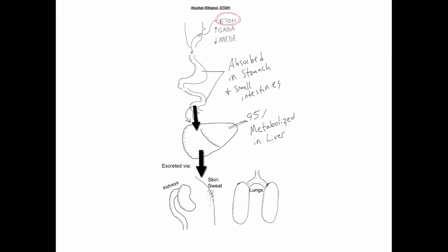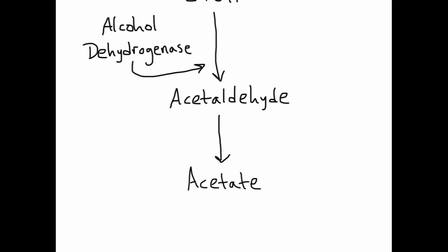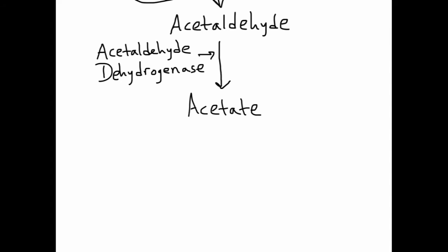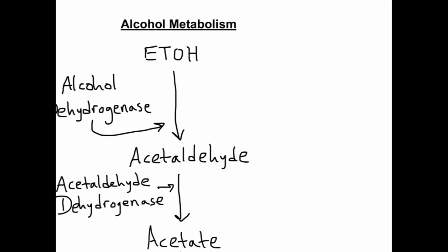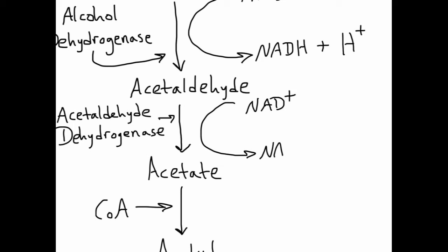Alcohol is broken down by the enzyme alcohol dehydrogenase in the stomach and liver into acetaldehyde. Acetaldehyde is then converted into acetate by acetaldehyde dehydrogenase. Coenzyme A, or CoA, then binds with acetate to form acetyl-CoA. Niacin, or vitamin B3, is required for this conversion and functions as nicotinamide adenine dinucleotide, or NAD, which receives hydrogen atoms from the enzymes that oxidize alcohol.